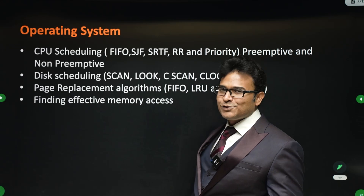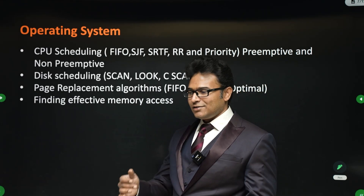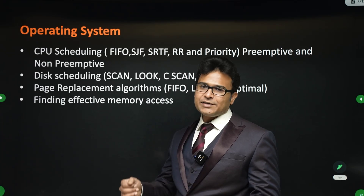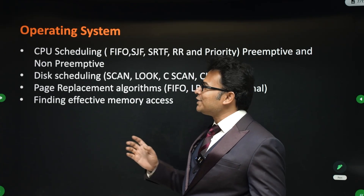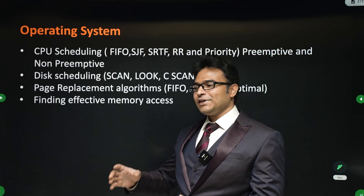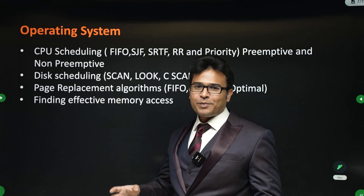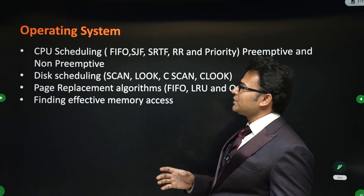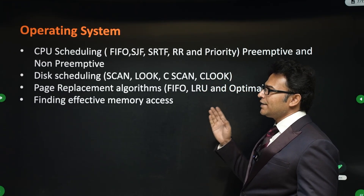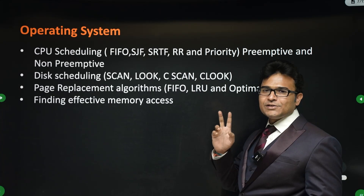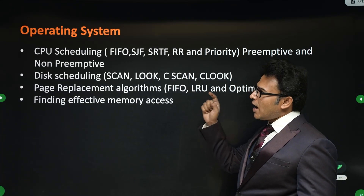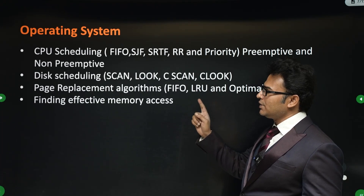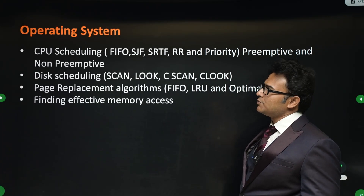For operating system, the goal here is how to get at least 50 marks in 30 days, so we focus on the most important topics. CPU scheduling is important — you'll get at least one mark from scheduling, either CPU scheduling or disk scheduling. Page replacement algorithms are important, and finding effective memory access time is also important.